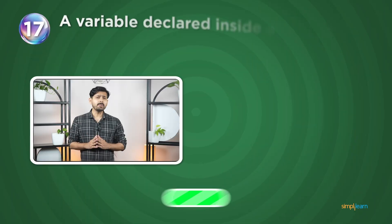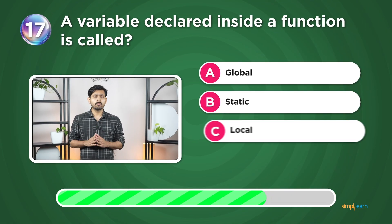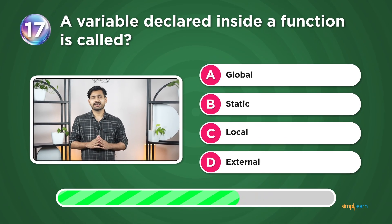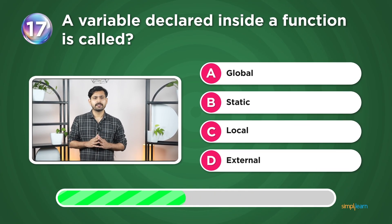Question 17: A variable declared inside a function is called what? Global, static, local, or external?